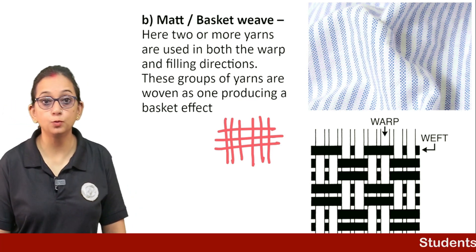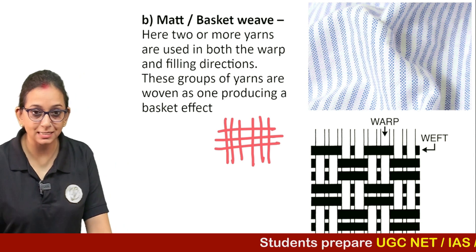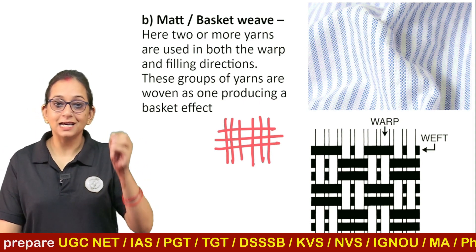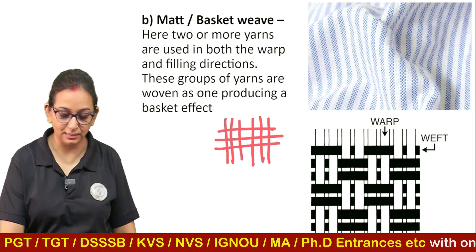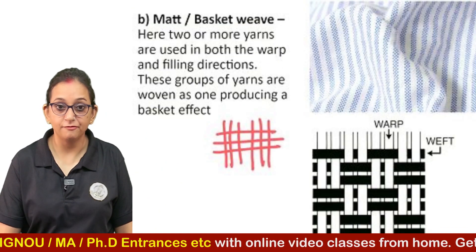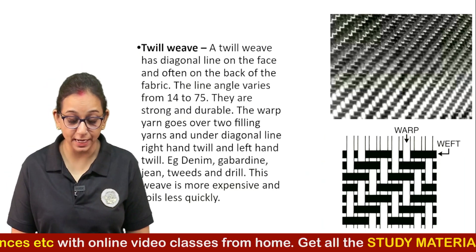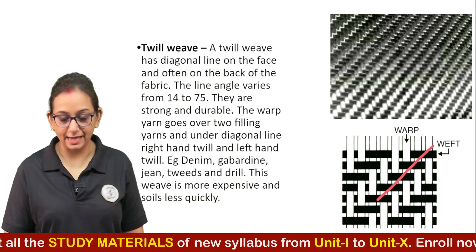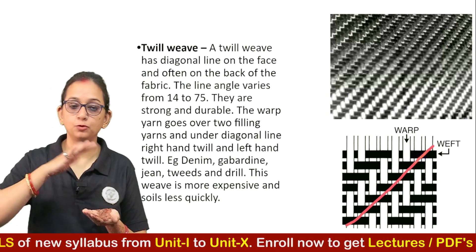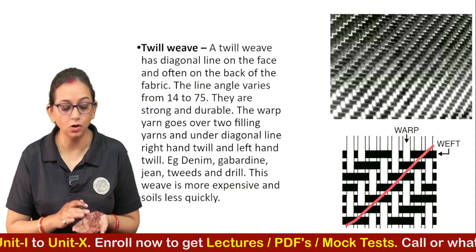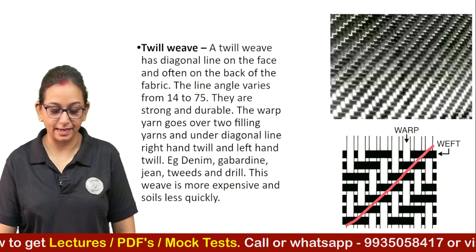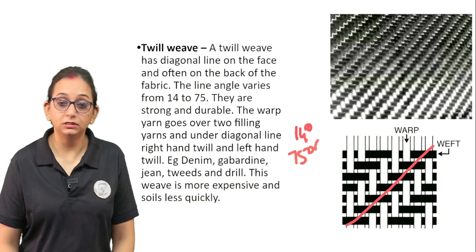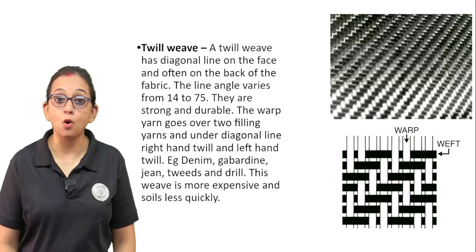Next we come to the twill weave. A twill weave has a diagonal line — you can see a diagonal line which is there because of the filling yarns. This diagonal line is on the face of the fabric, and if you invert the fabric, it is also on the back. This diagonal line varies from a degree of somewhere around 14 degrees to 75 degrees. These twill weave fabrics are very strong fabrics.